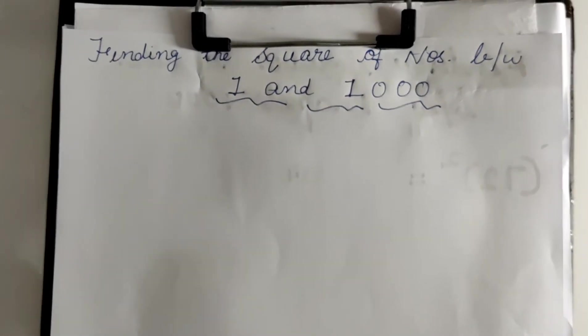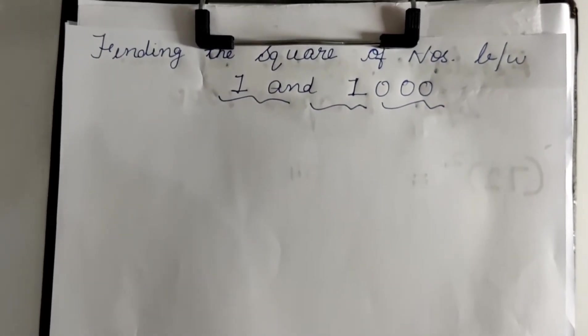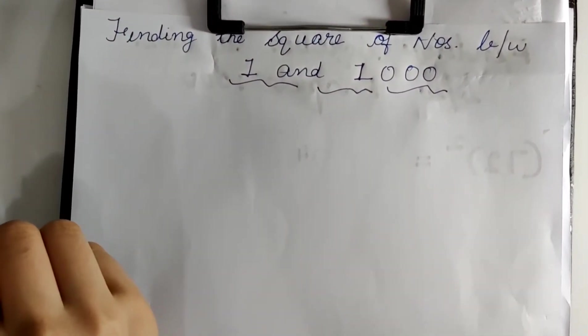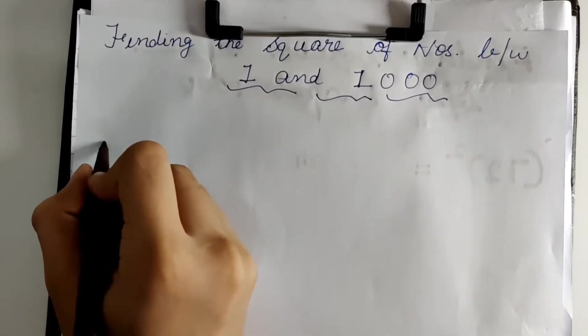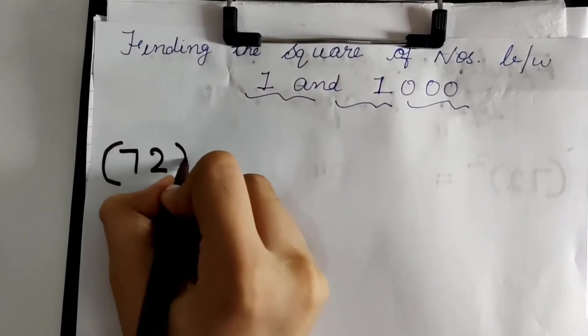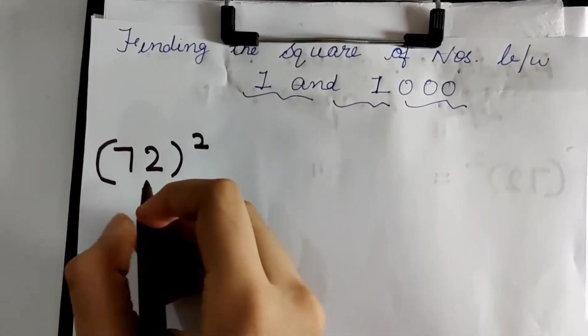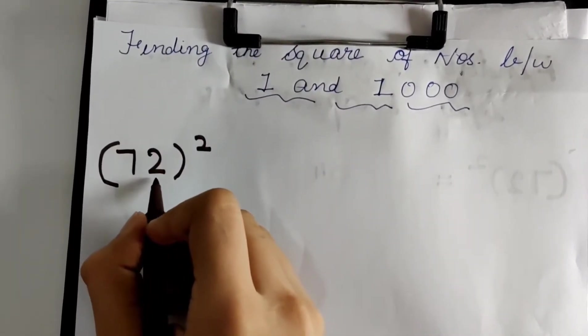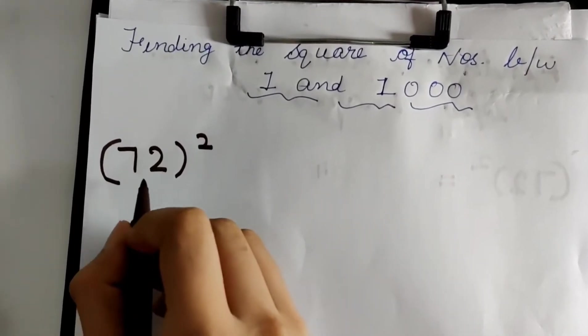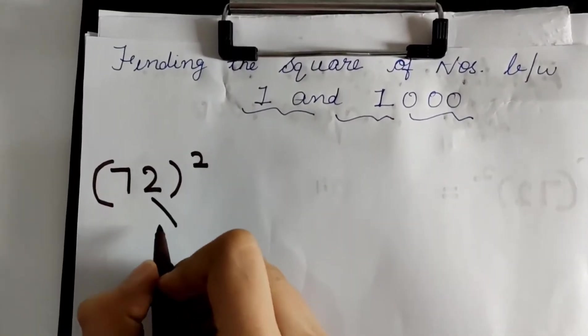We're going to learn how to find the square of any number between 1 and 1000 in less than 5 seconds. Let us understand how this trick works by taking a 2 digit example. Note that this trick will only work for a 2 digit number. So let us take 72. The first step is to find the square of the unit's place. The unit's place of 72 is 2.